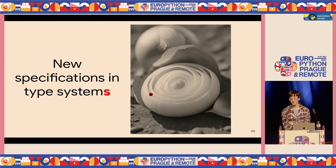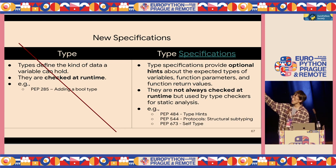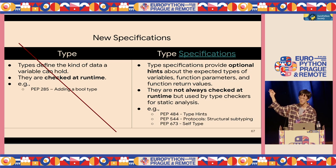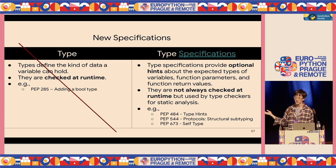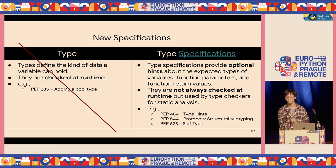Now for new specifications in type systems. These are specifications about optional hints that are not always checked at runtime — examples include various PEPs. I'll use PEP 673, the self-type PEP, as a walkthrough example.